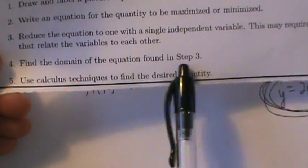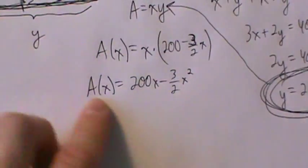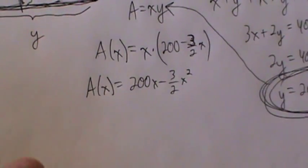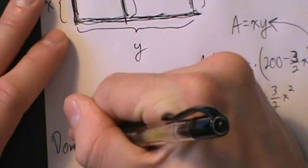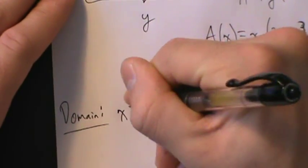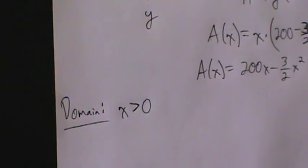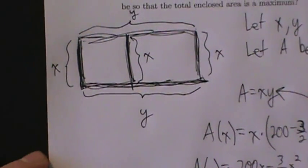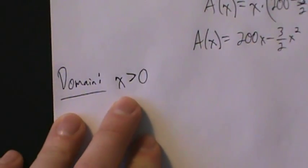Step four: find the domain of the equation found in step three. This can be tricky — if you just look at the equation 200x − (3/2)x², there's no restriction and x can be anything. But we are restricted by the geometry of the problem. x represents a length, so x must be strictly positive. Some people might say x = 0 is OK, but that's not an interesting case, so let's say x must be strictly positive.